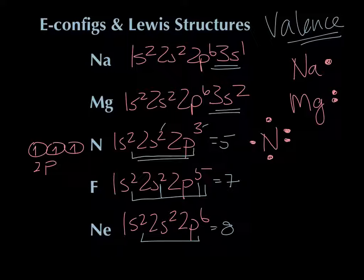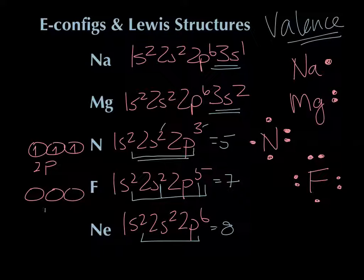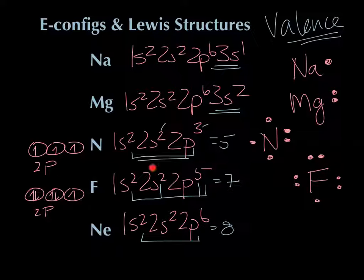For fluorine, we've got our two s electrons, and then for the p electrons — hit pause and see if you can figure out where they go. The p electrons go one, two, three, then they start to pair up: four and five. That's the Lewis dot diagram for fluorine. When we draw the orbital diagram for fluorine, the 2p electrons go one, two, three and then pair up for four and five — we're representing that same idea in our Lewis diagram.